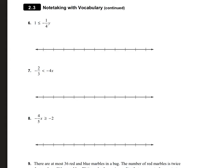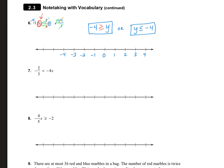On number 6, we have 1 is less than or equal to negative 1 fourth y, so we need to get rid of the negative 1 fourth. It's a fraction, so multiply by the reciprocal, which is negative 4. The 4s cancel, the 1s cancel, and the negative times a negative is now a positive, so you're left with just y. But we multiplied by a negative, so we have to flip the sign. On the other side, negative 4 times 1 is negative 4. So we have a closed circle at negative 4, heading down.